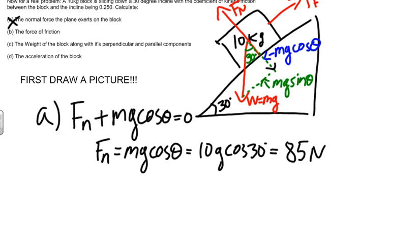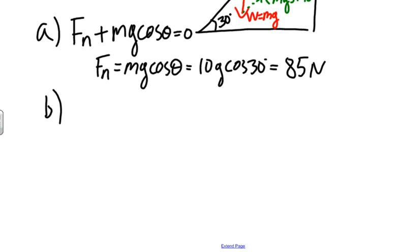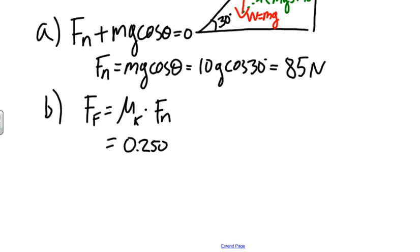Next, I want to find the force of friction. To calculate it, we use the friction formula: force of friction equals the coefficient of kinetic friction times the normal force. The coefficient of friction was given as 0.250, and we just solved for the normal force of 85 newtons. Solving that gives a friction force of 21.2 newtons.